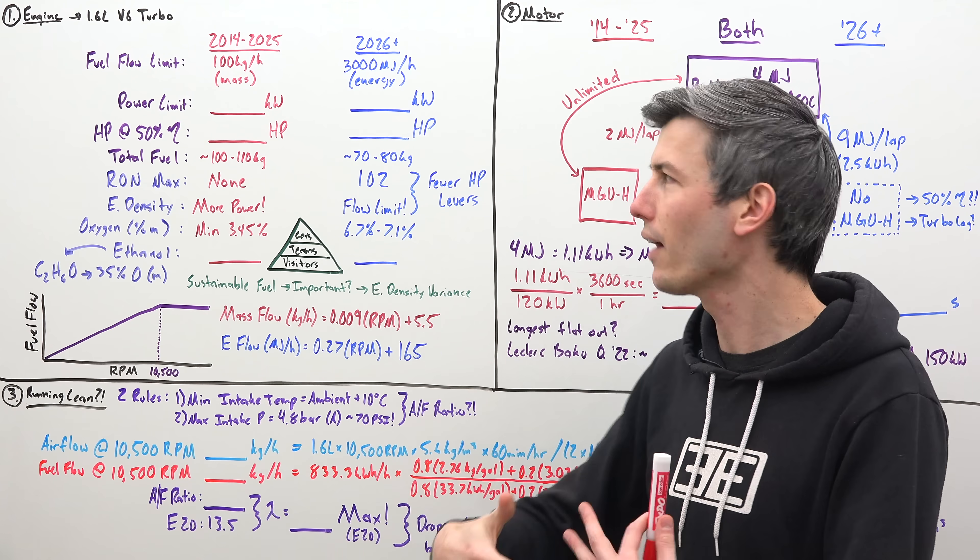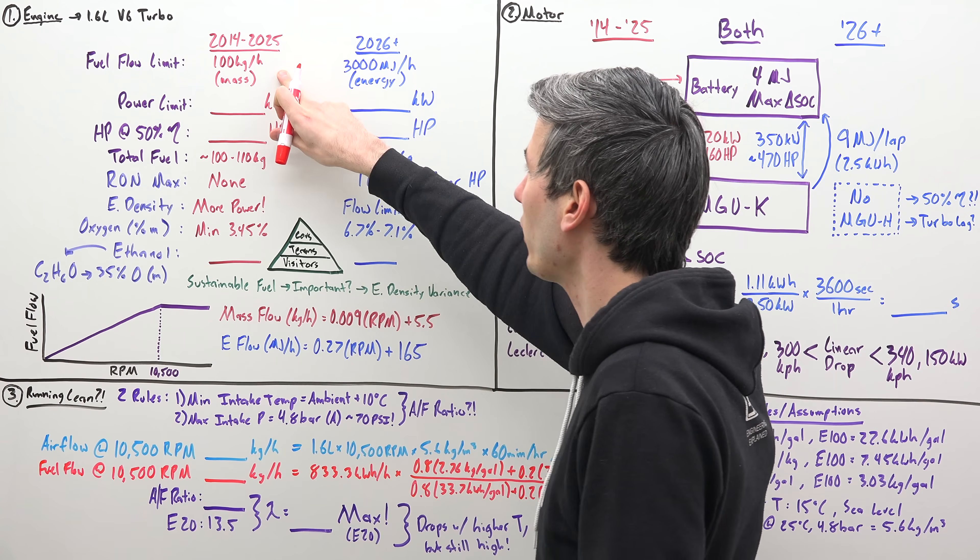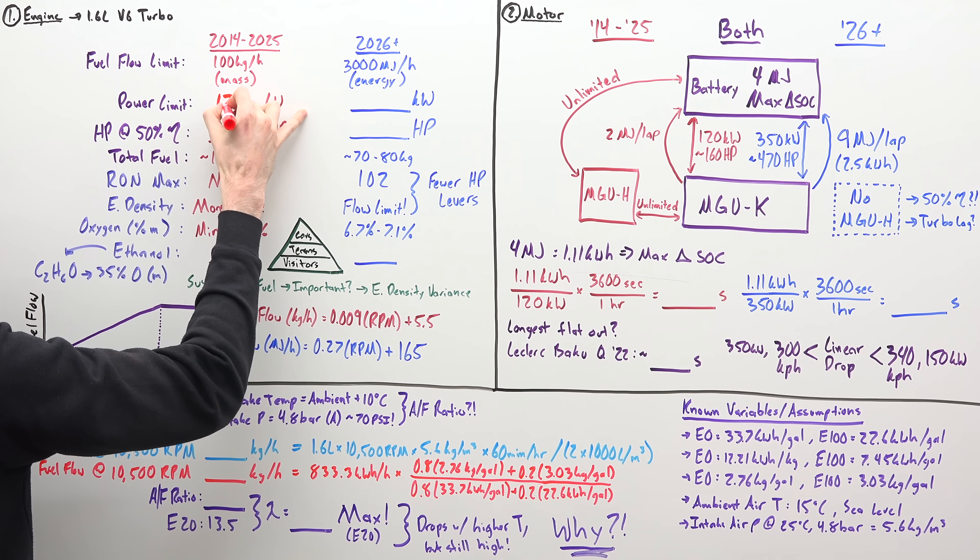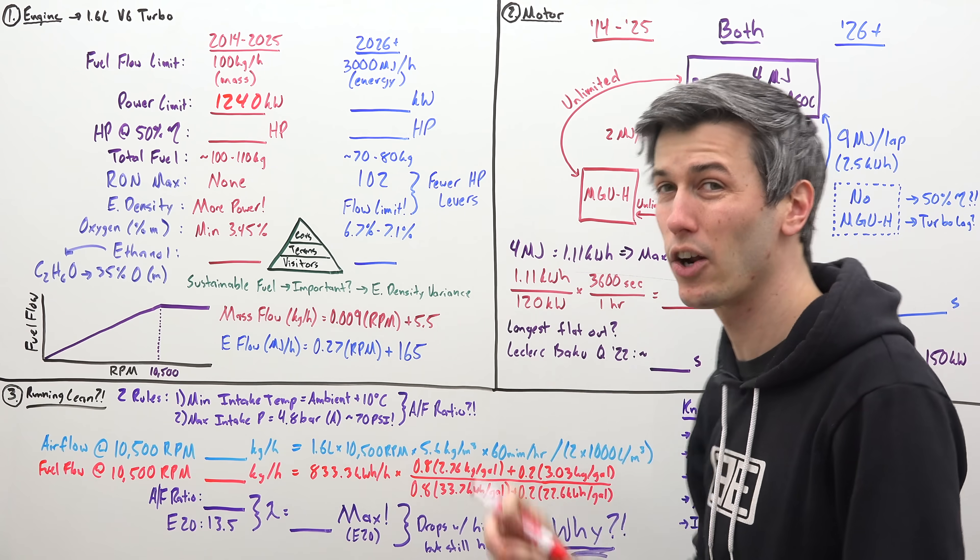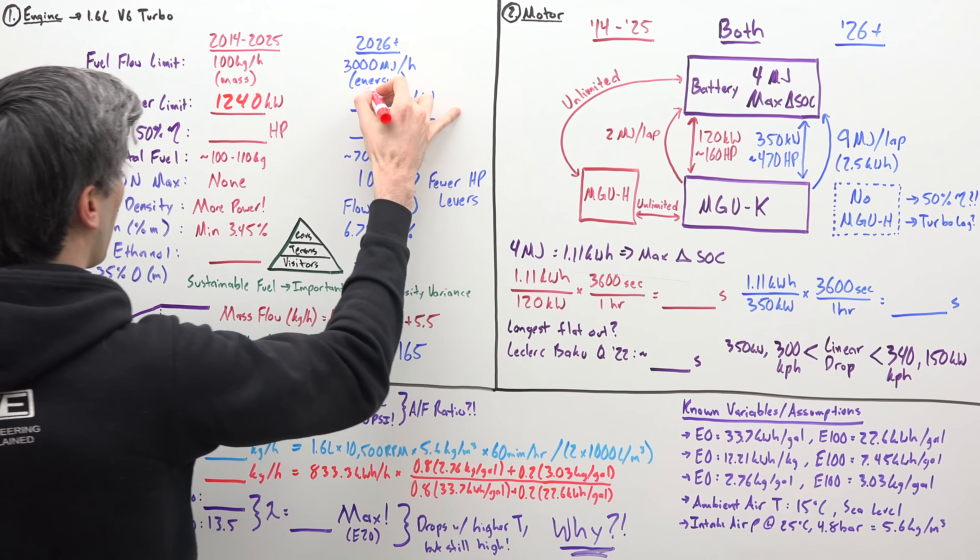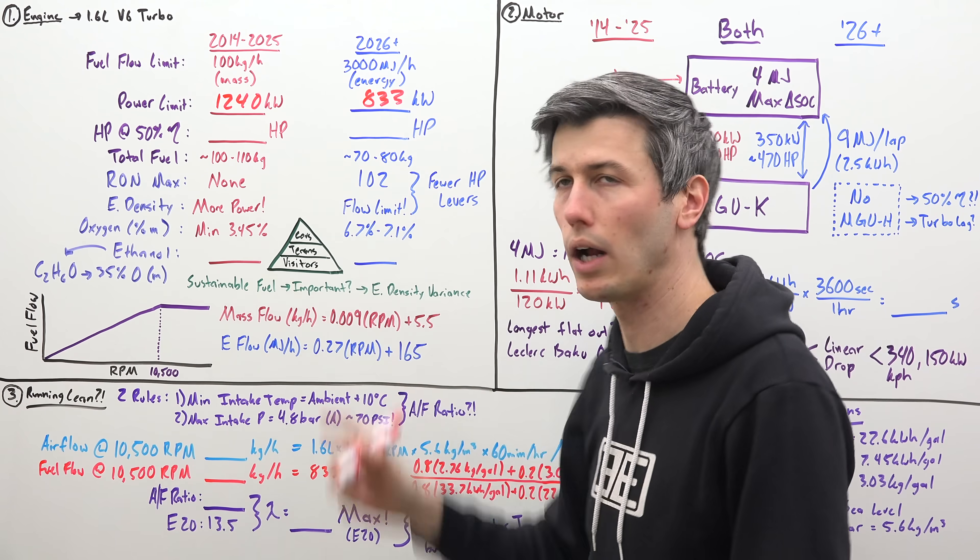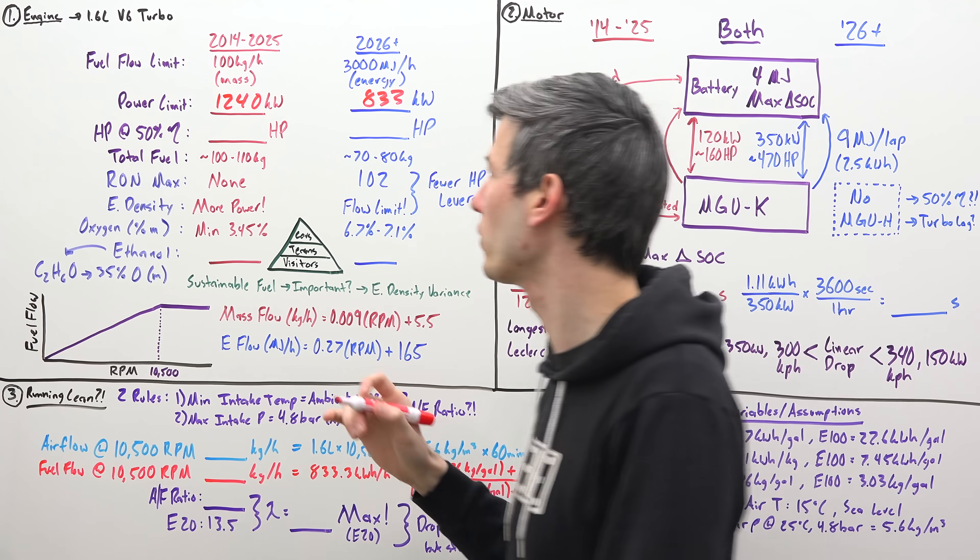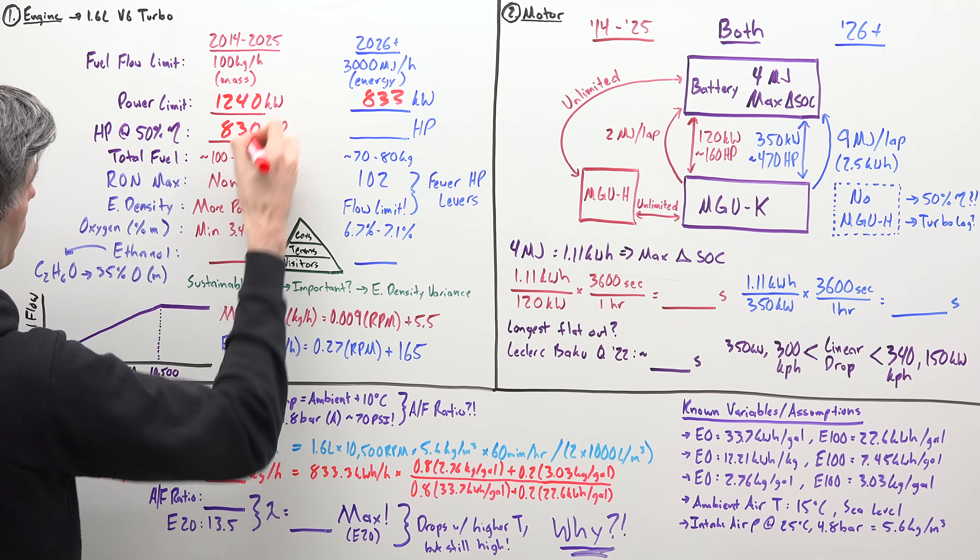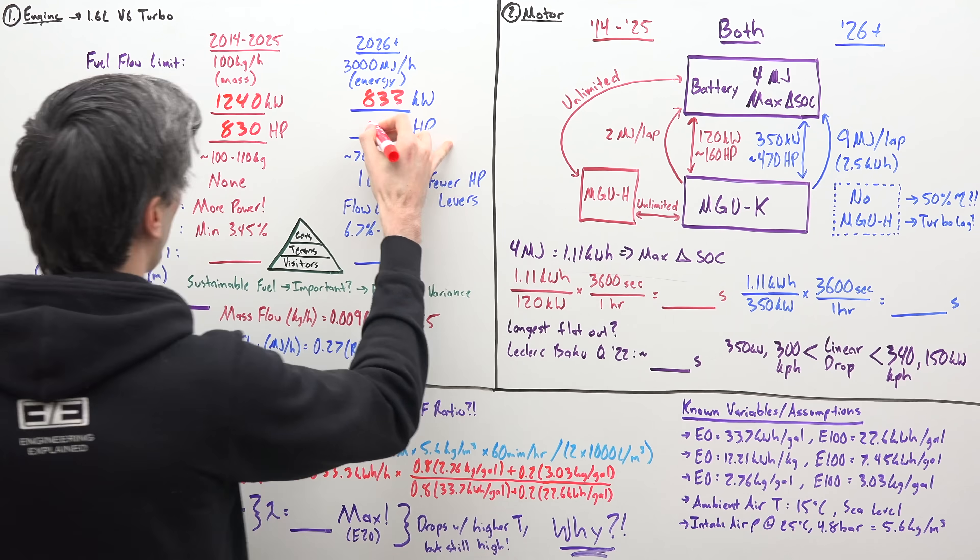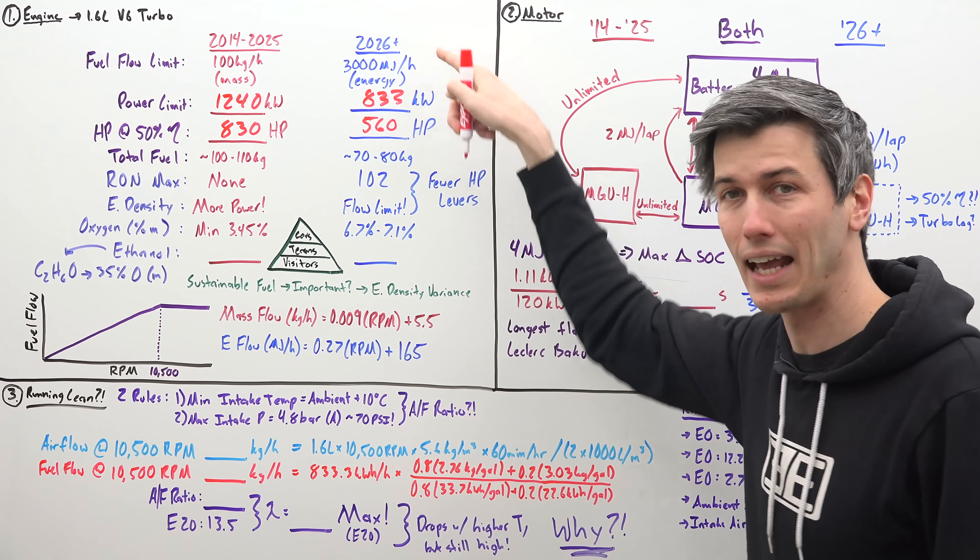Let's translate this into a maximum theoretical power assuming you had 100% thermal efficiency. A fuel flow rate of 100 kilograms per hour gives you a maximum power of about 1,240 kilowatts. 3,000 megajoules per hour is about 833 kilowatt hours per hour, in other words 833 kilowatts. So you can see that number is significantly less. Operating at about 50% thermal efficiency, we have about 830 horsepower in the current generation engines versus about 560 horsepower in the next generation, all a result of that limited energy flow.